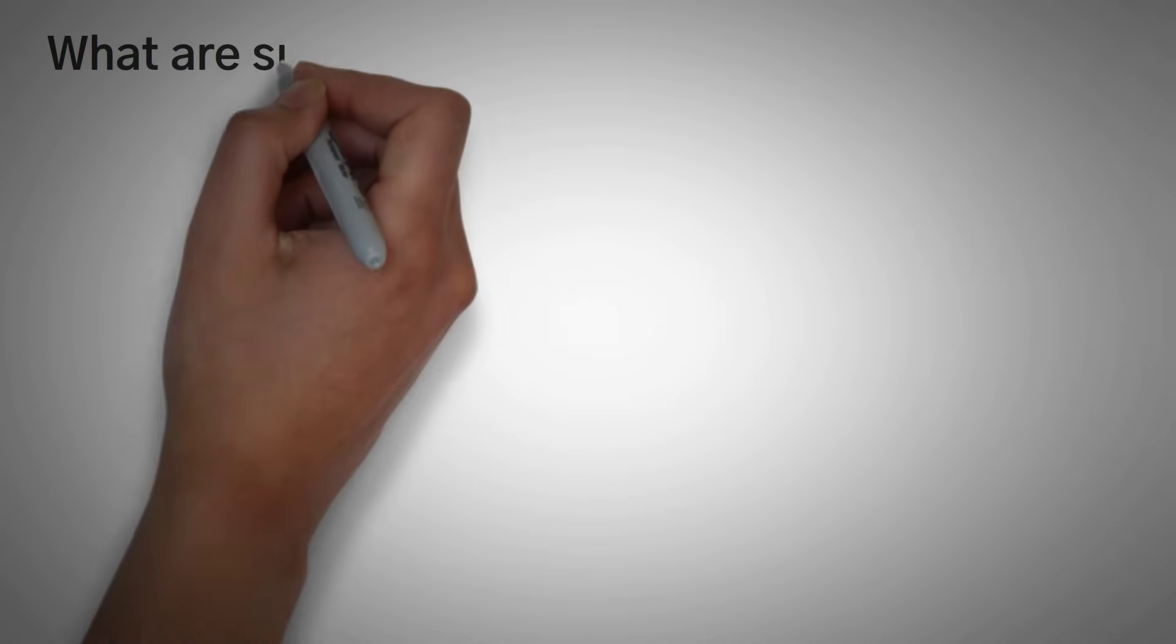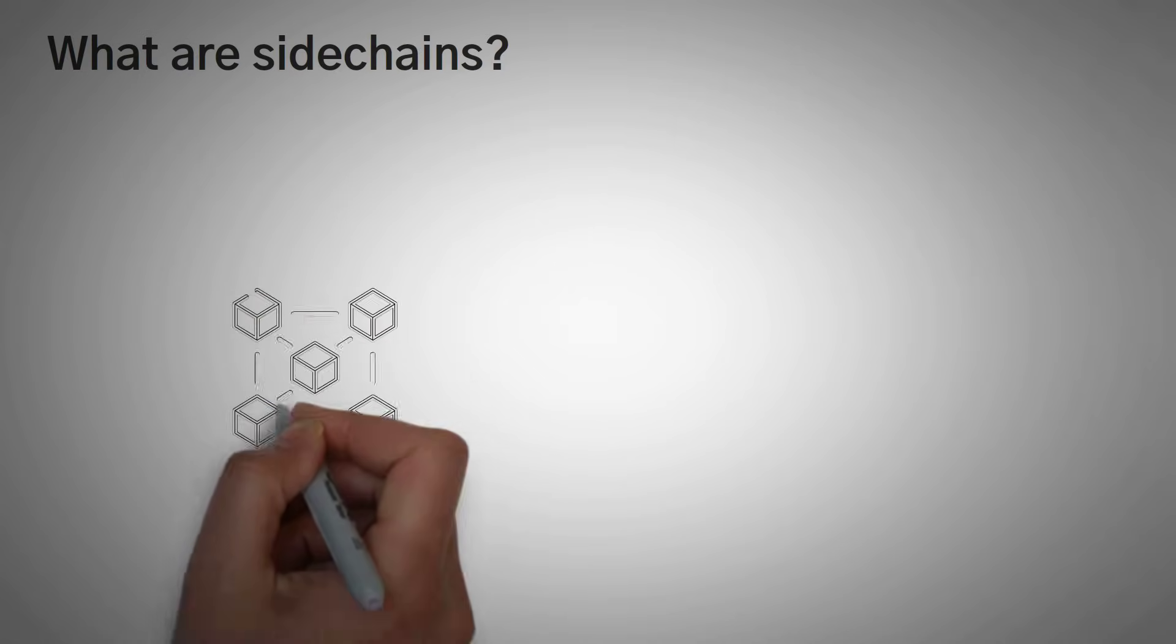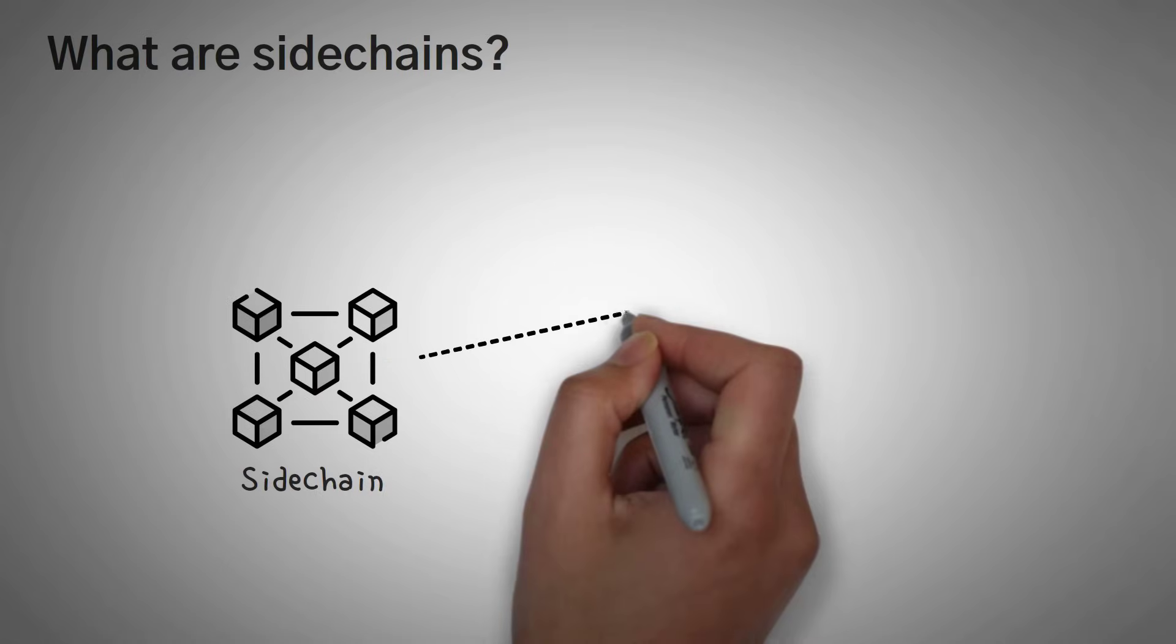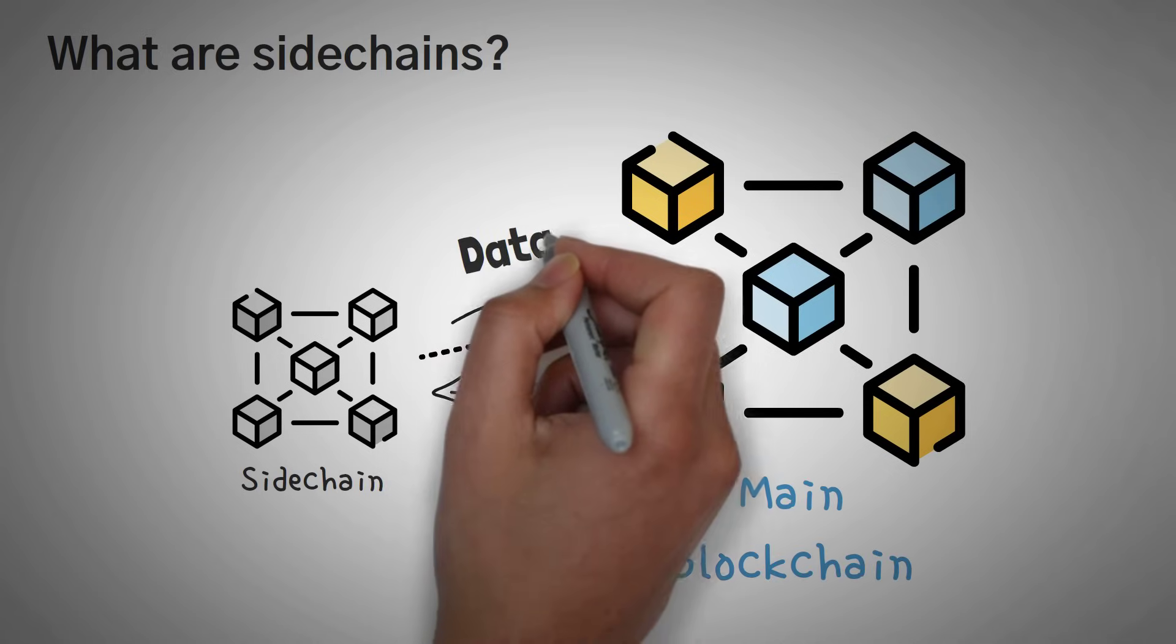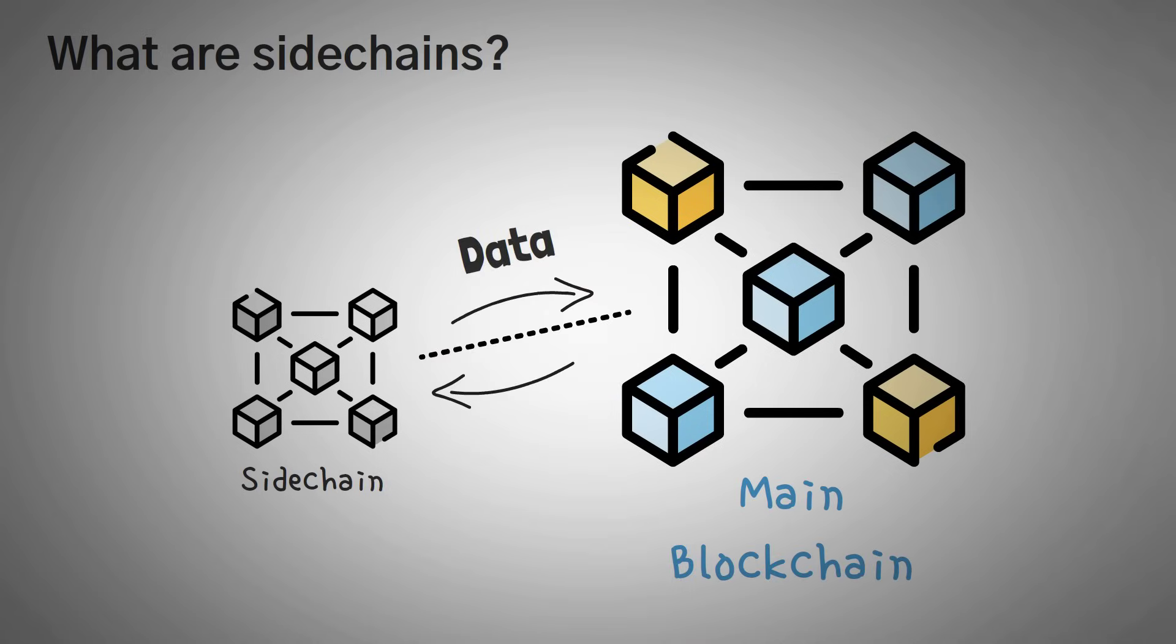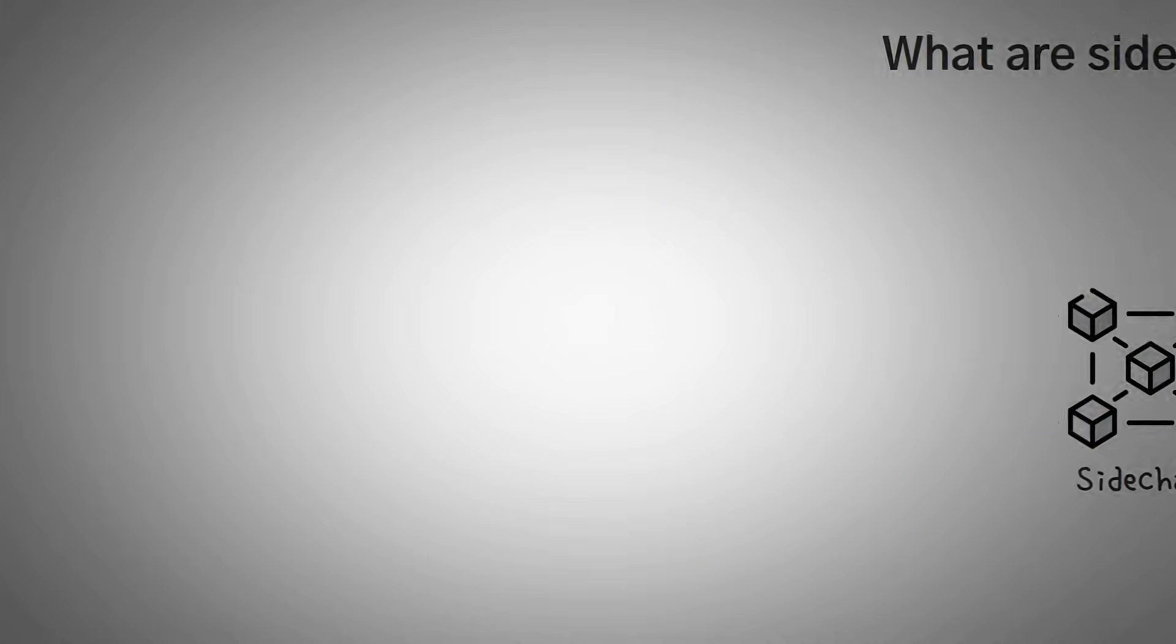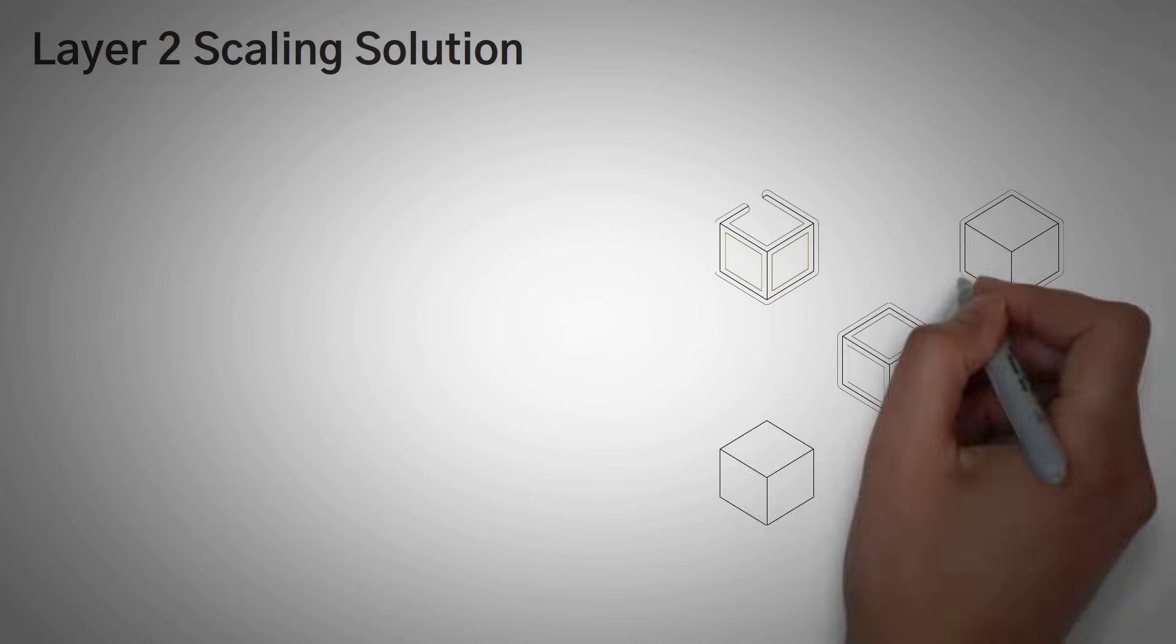So first off, what are sidechains? Sidechains are a separate blockchain that is connected to another blockchain through a two-way peg to help process some of the data from the main blockchain. Now, before we move on too much, let's go over a review of what a layer 2 scaling solution is and why we need them.